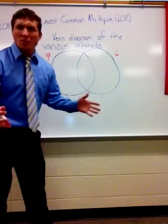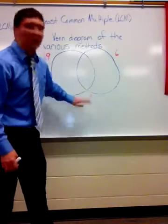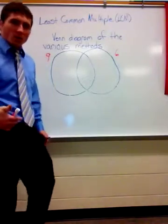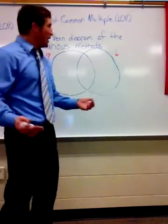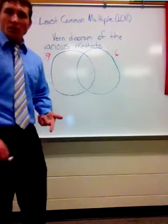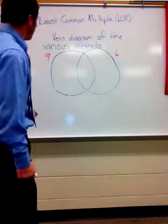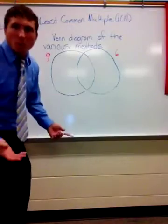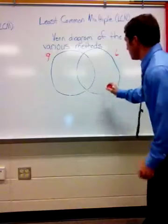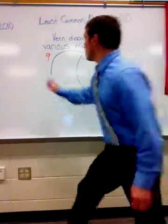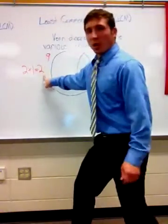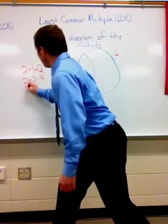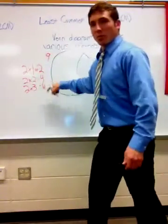Least common multiple using the prime factorization method in combination with a Venn diagram. First, we need to look at what a least common multiple is. The word 'least' means the lowest, 'common' means same, and a multiple is when we take a whole number times a non-zero whole number — the product of those two numbers gives us a multiple. Some multiples of 2 would be: 2×1=2, 2×2=4, 2×3=6 — so 2, 4, 6, 8, 10, 12 are all multiples.